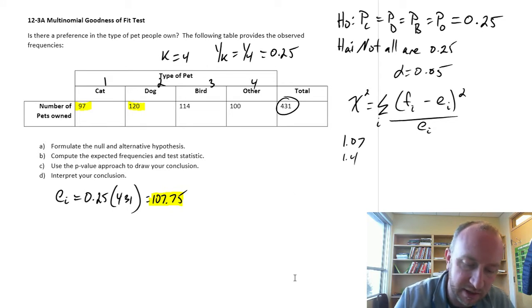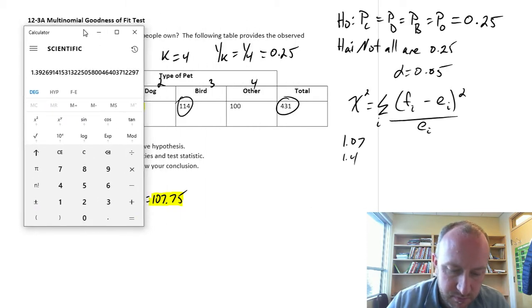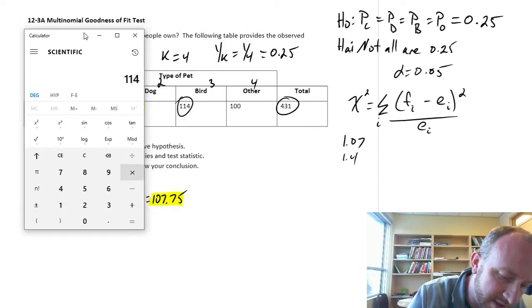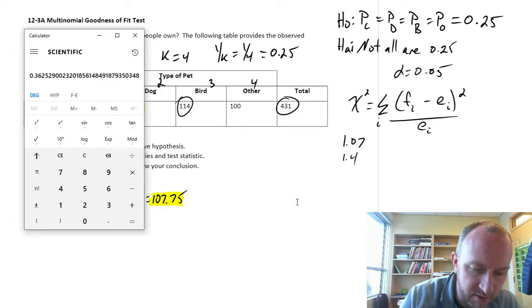Let's just do the next one. Now we'll do the birds. It'll be 114 minus 107.75 squared divided by 107.75, so 0.36.